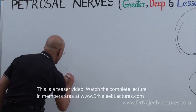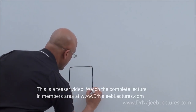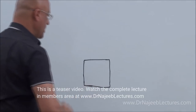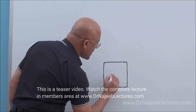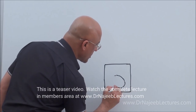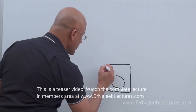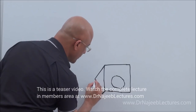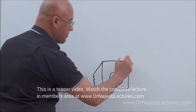Here is the middle ear cavity. This is its medial wall — the medial wall has a very important protrusion called the promontory. Here is its posterior wall. I have opened it up here.